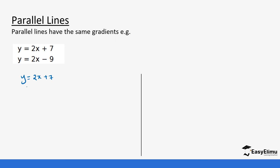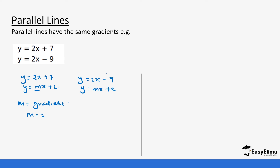Remember, if this equation is in the form y = mx + c, the value of m is the gradient. So in this case our value of m equals 2. The same case with y = 2x - 9 — if we look at it in the form y = mx + c, the value of m is also 2. If the equation is not in this form, always make it into this form. Since 2 equals 2, the gradients are equal, so we say that these two equations are actually parallel lines.